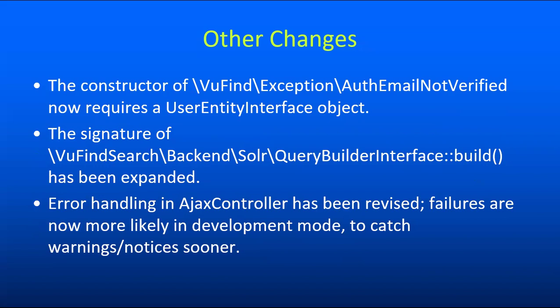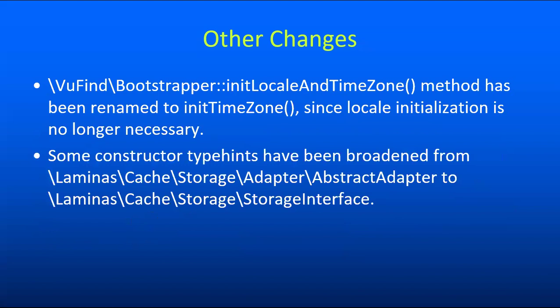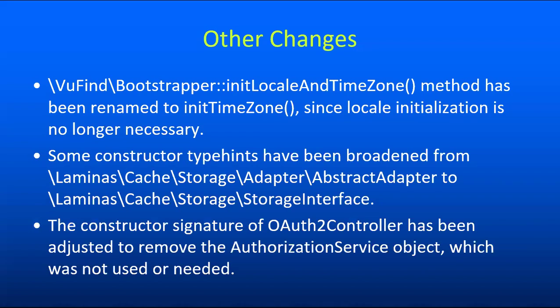We've also revised the way the Ajax controller handles errors. Previously it swallowed a lot of things, which made it possible for minor bugs to get missed. But now when you're in development mode, warnings and notices are actually going to cause failures, which will hopefully allow us to catch problems more quickly. The bootstrapper init_locale_and_time_zone method has been renamed to simply init_time_zone because we no longer need to initialize locales. Some constructor type hints have been broadened to use the Laminas cache storage interface instead of the abstract adapter. The constructor signature of the OAuth2 controller has been adjusted to remove the authorization service object, which was being passed in previously but never actually used.